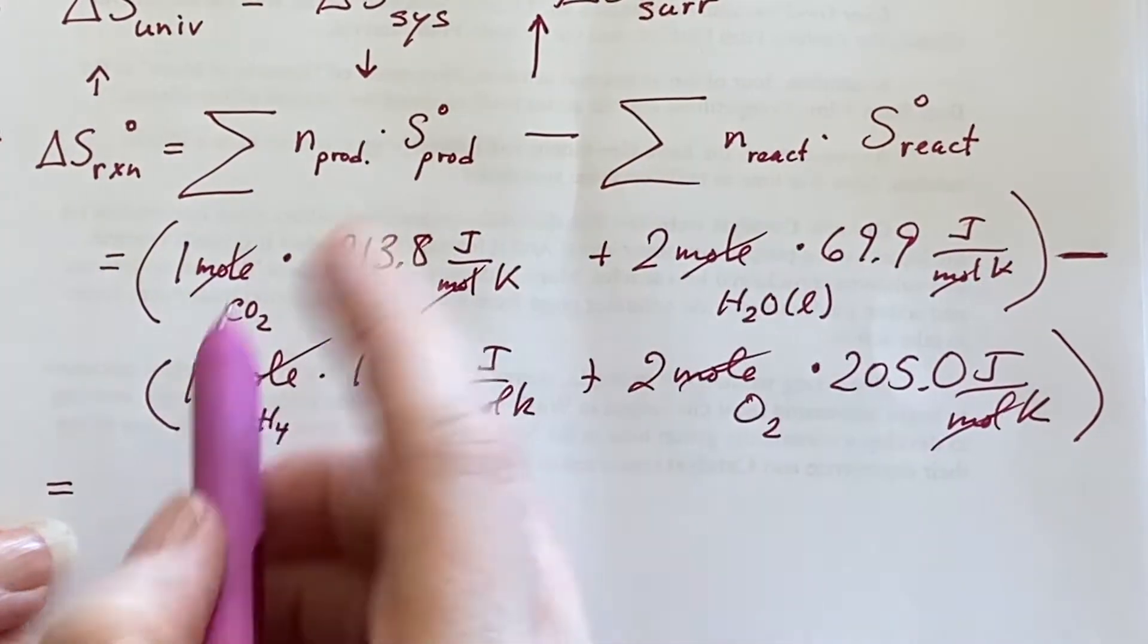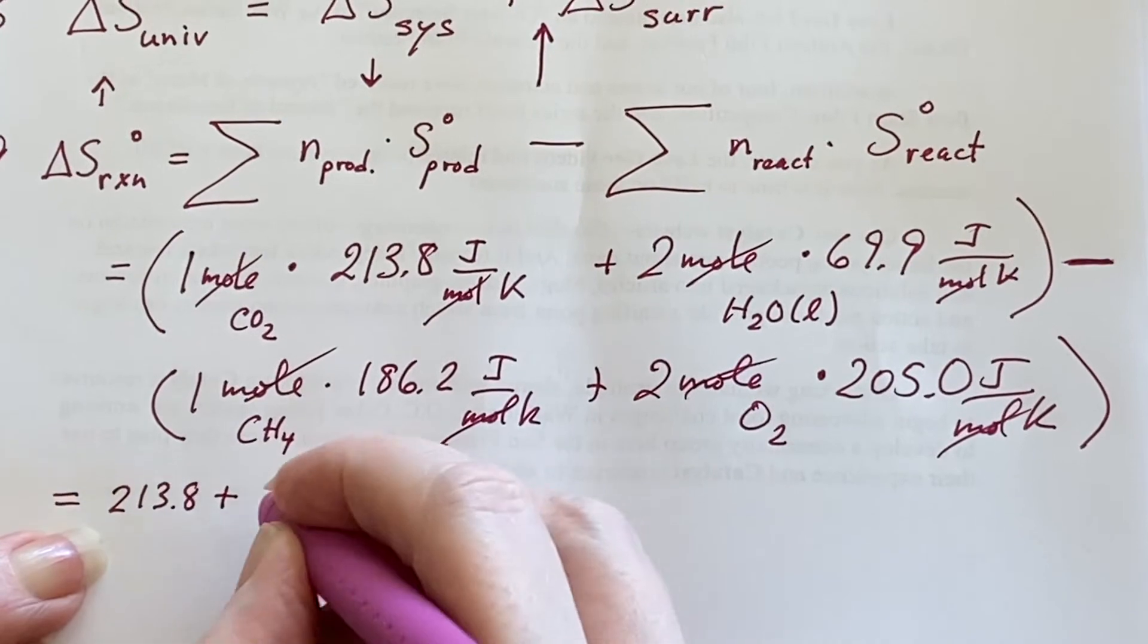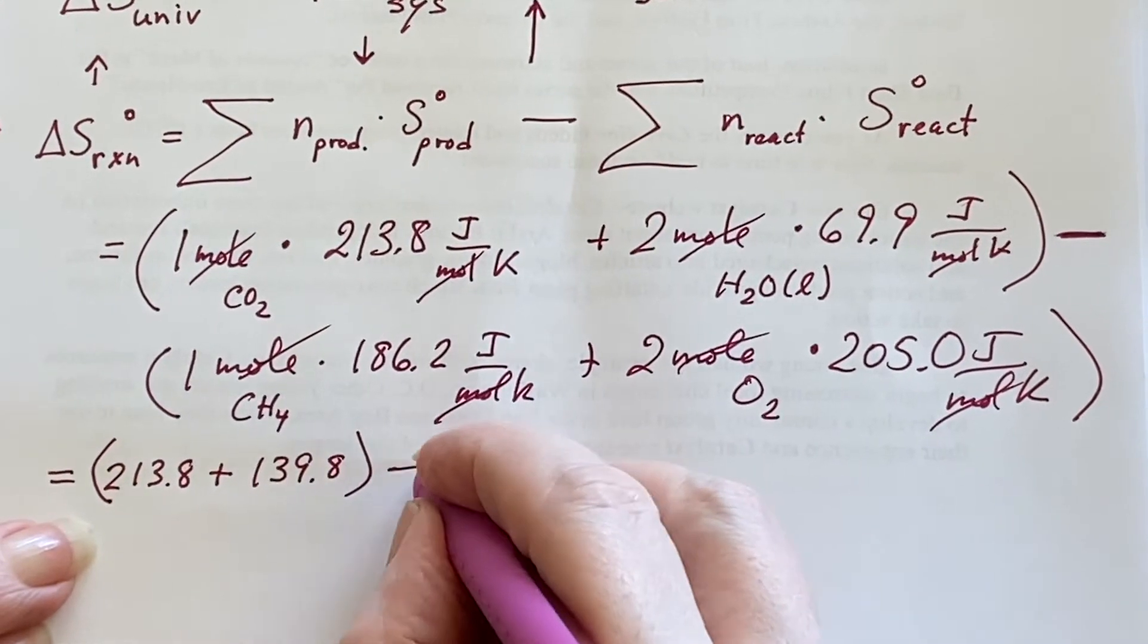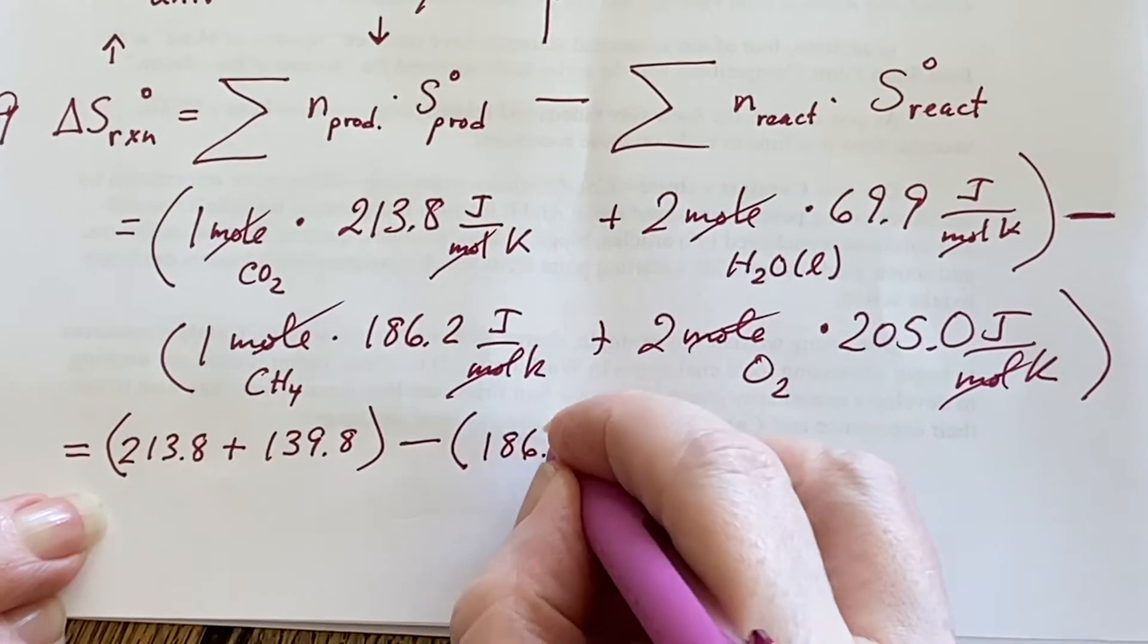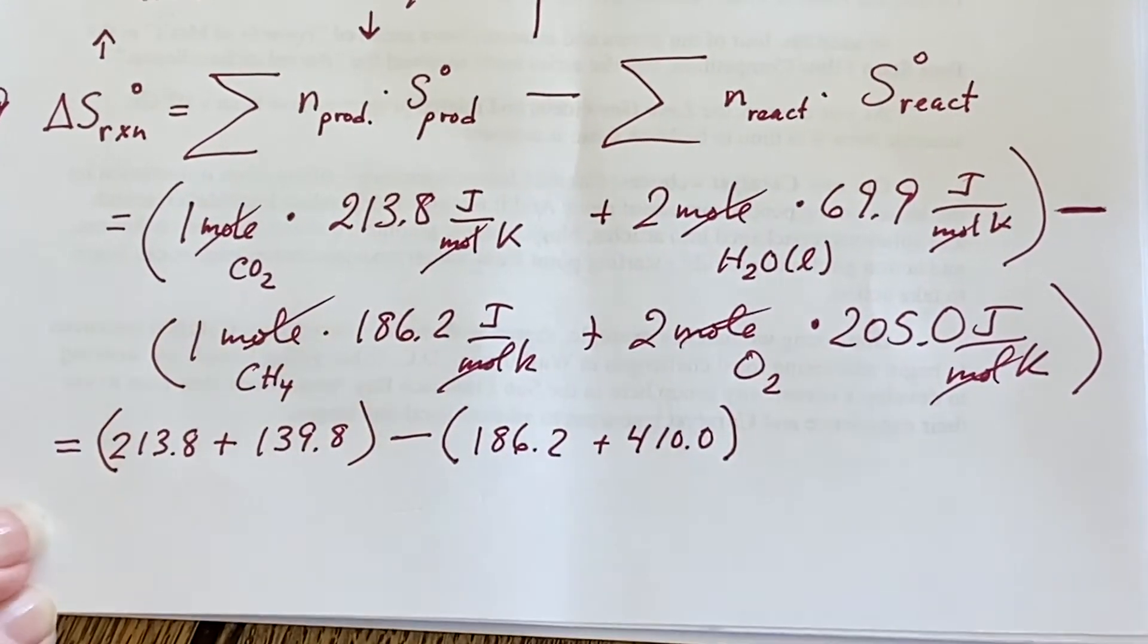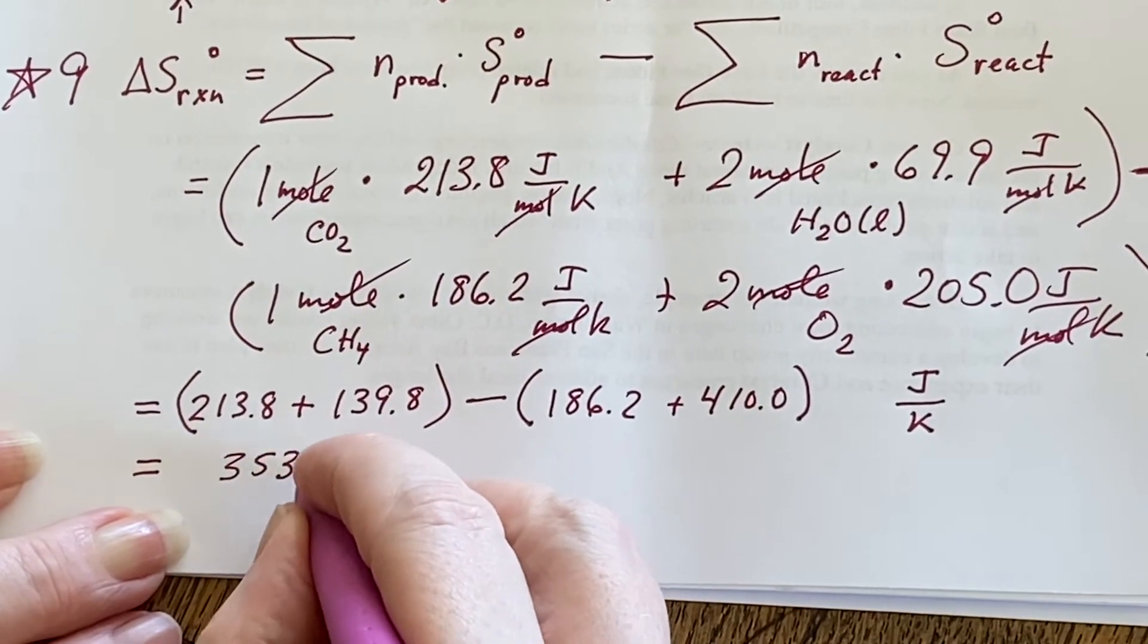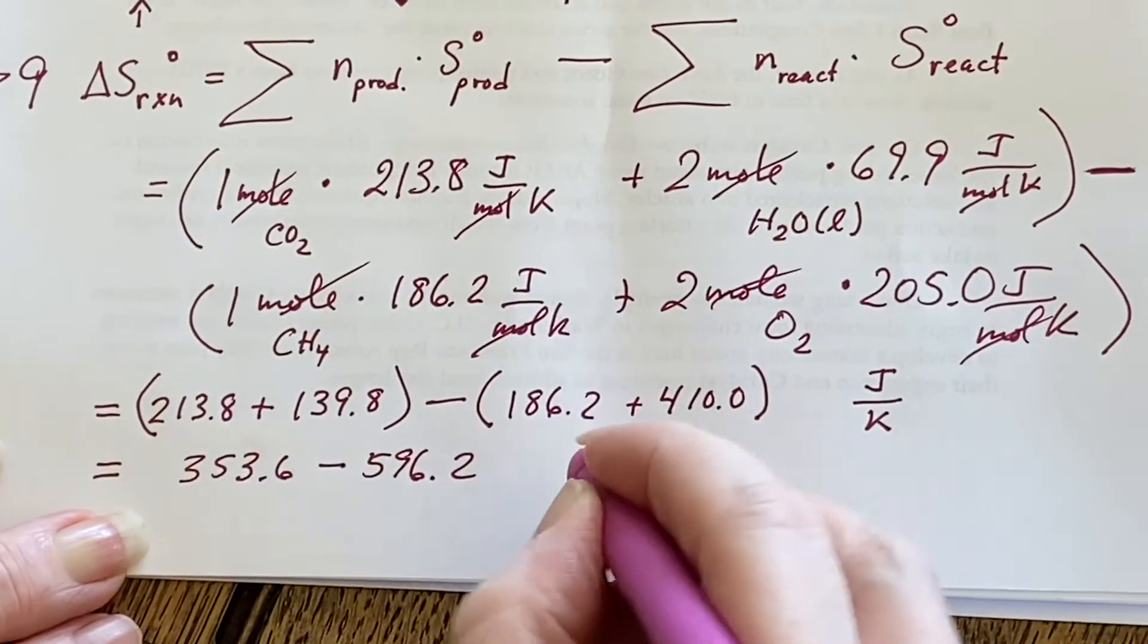So for the first ones we're going to get 213.8 plus 139.8. Those are bundled together because those are the products, and we'll subtract the reactants. And for that we get 186.2 and 410.0. Now remember this is joules and Kelvin. 353.6 minus 596.2.